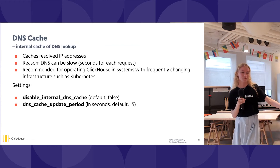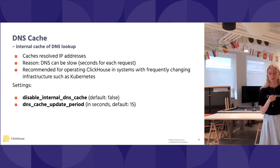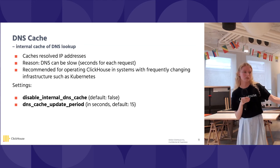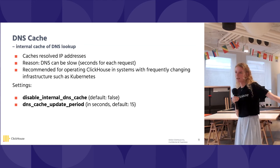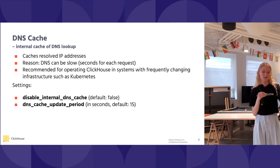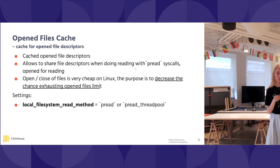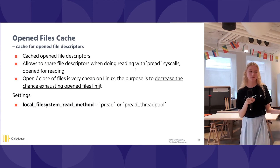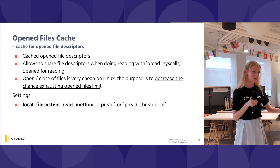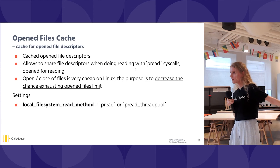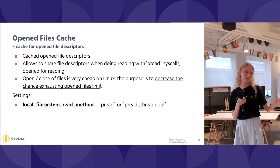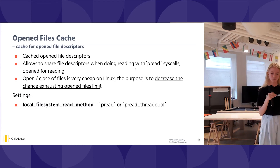DNS cache: it is actually possible that DNS can, in some very rare cases, respond in seconds. ClickHouse cannot be inefficient even in rare cases, therefore we have our own DNS cache. It is enabled by default. We also have an open file cache. Opening and closing files does not take a lot of time — it is really fast and can be done thousands of times per second — but files are opened quite often and so we can run out of open file limits. So we cache open file descriptors to reuse them. It is also enabled by default.